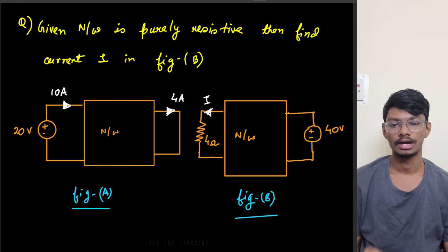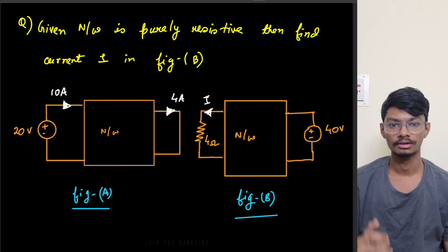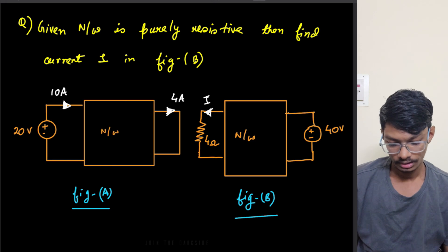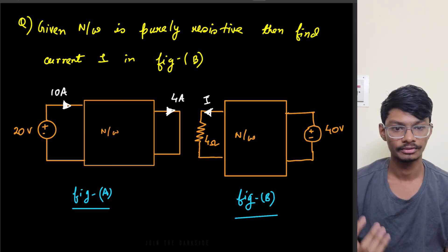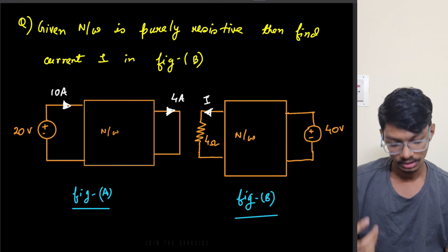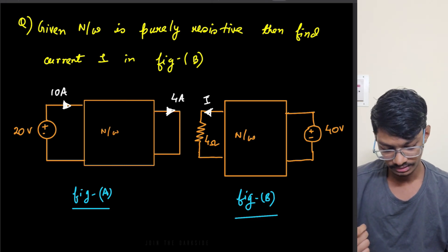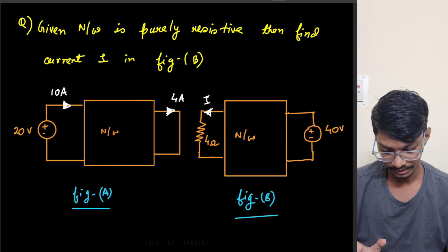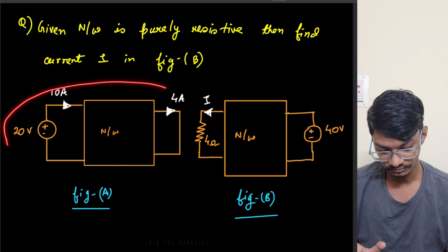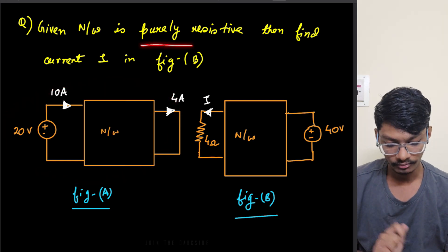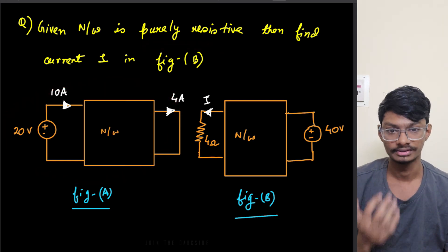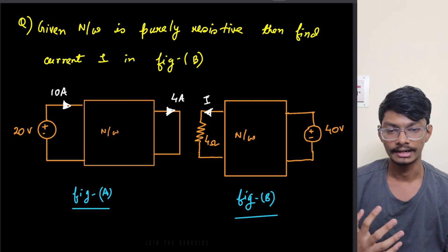Hello everyone, I am Anish and today we're going to solve this question on the reciprocity theorem. What this question is telling us is: given the network is purely resistive, find the current i in figure b. We have to find this current i in figure b, and also one thing mentioned is that the network is purely resistive.